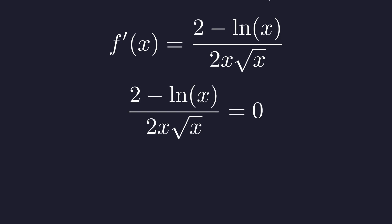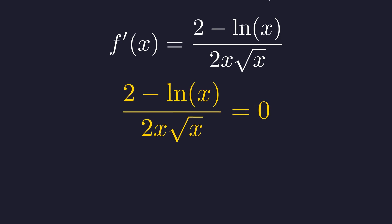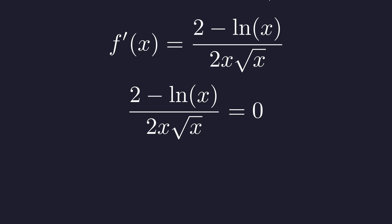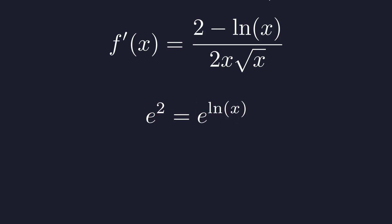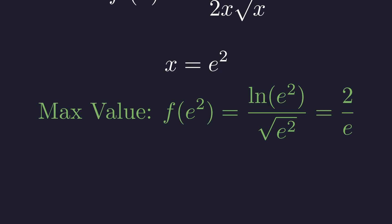To find the maximum, we set the derivative equal to 0. A fraction is 0 only if its numerator is 0, which simplifies our task to solving this equation. Adding the natural log of x to both sides, and to solve for x, we undo the logarithm by making each side the exponent of base e — this is known as exponentiating both sides. Since e to the power of the natural log of x is simply x, we find our critical point. Plugging this back into our function, we find the maximum value is 2 divided by e.